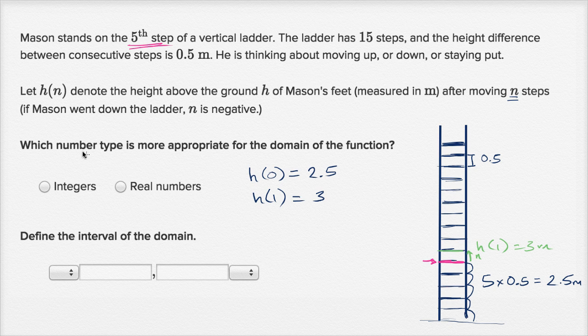But anyway, that's not what they're asking us about. They're saying which number type is more appropriate for the domain of the function. So the domain, just as a review, that's the set of numbers that we can input into the function and get a valid output. And it's clear here, so we have to pick between integers or real numbers. Well, n, which is our input, that's the number of steps he goes up or down. So it could be positive or negative, but we're not going to talk about half steps.